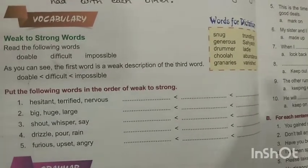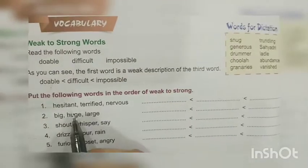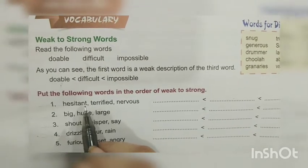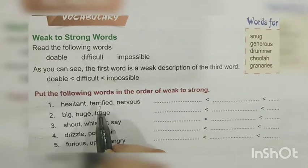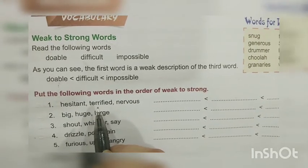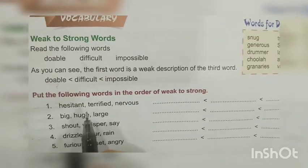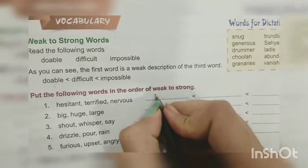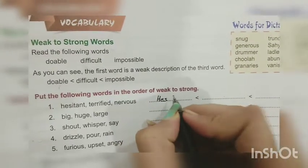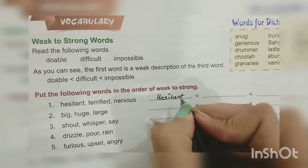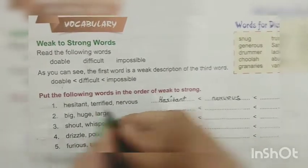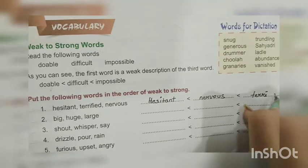The first set of words is: hesitant, terrified, nervous. We have to arrange from very shy and slow to very scared. So we write hesitant first, because hesitant means someone who acts very slowly. Then nervous, meaning scared. Then terrified, meaning very much scared. We arrange all words like this.